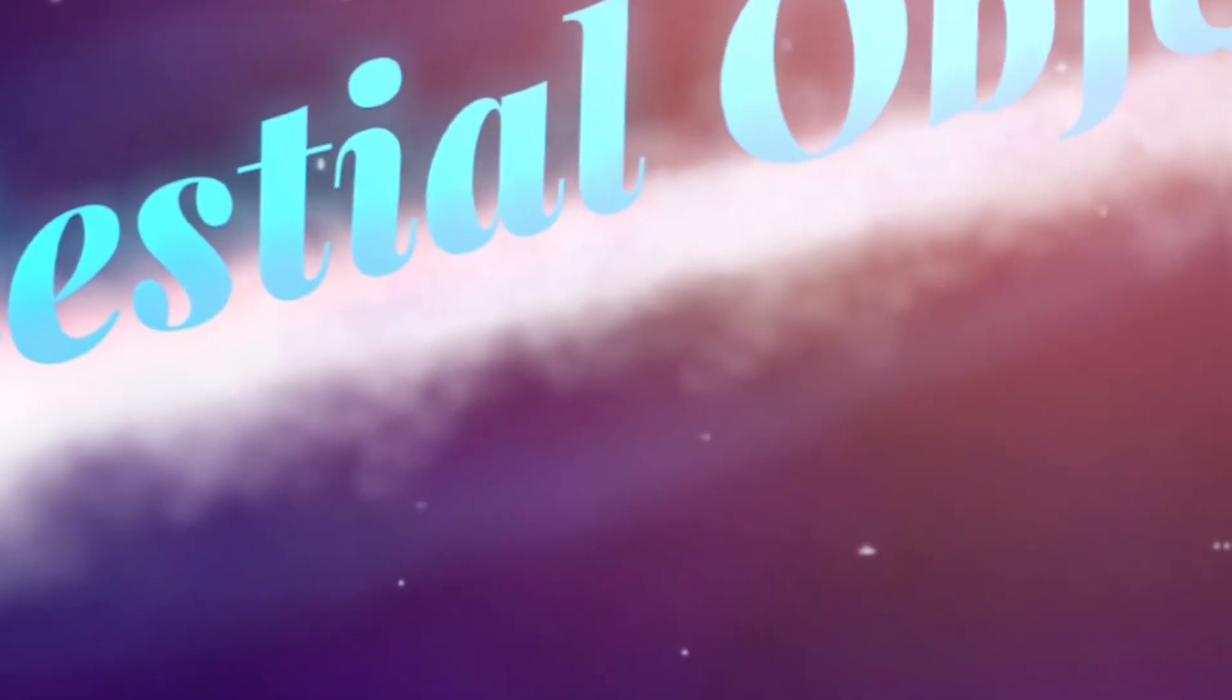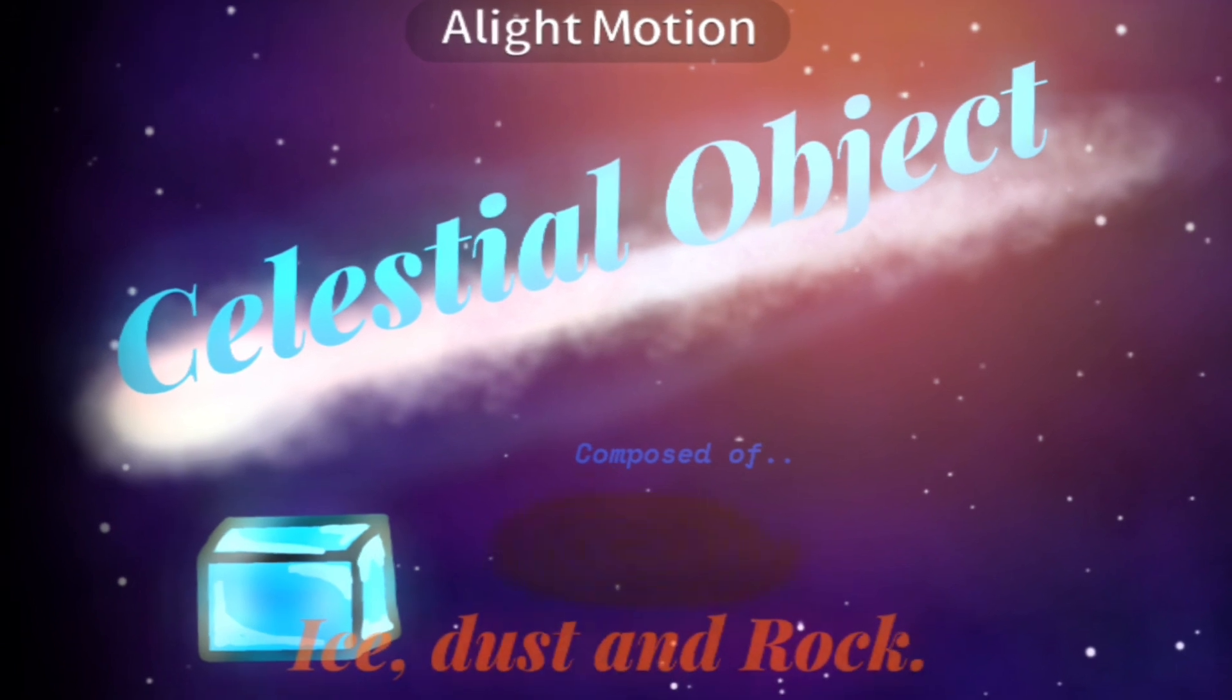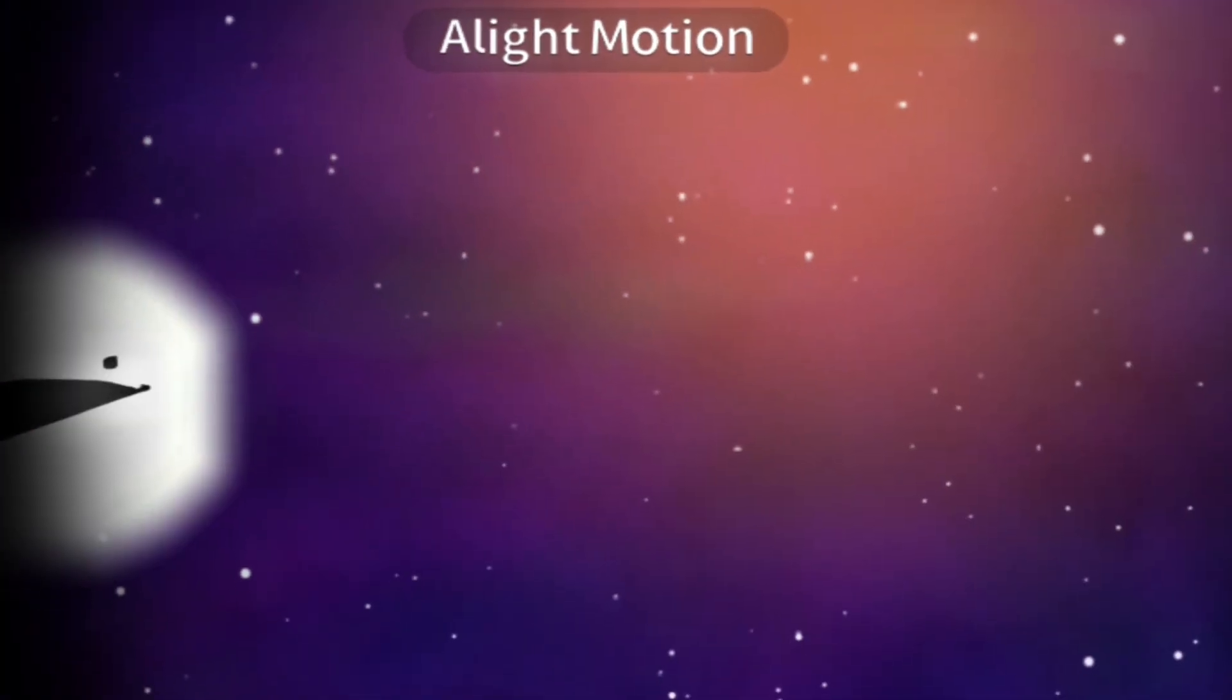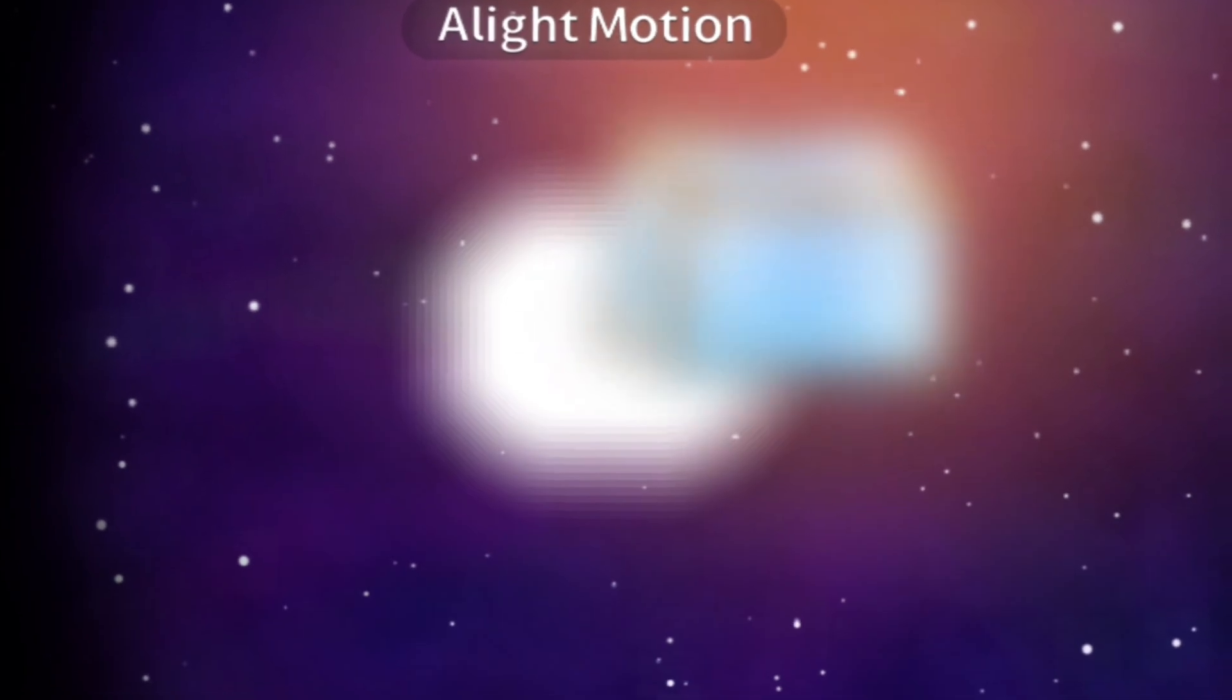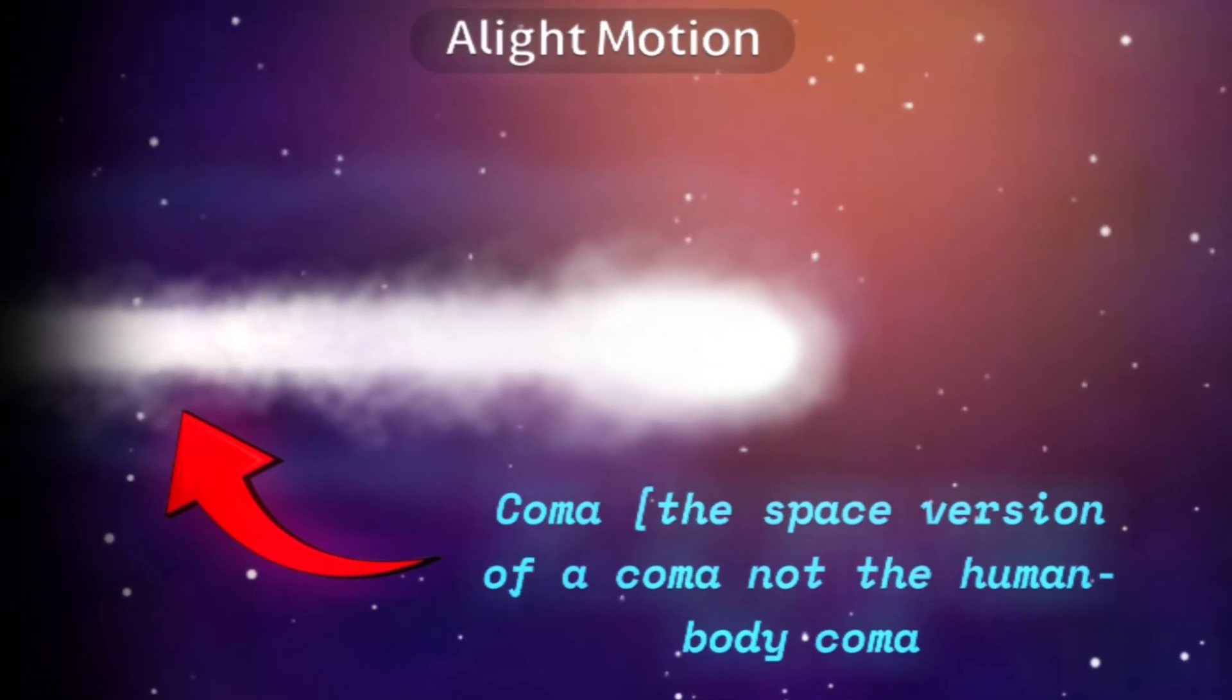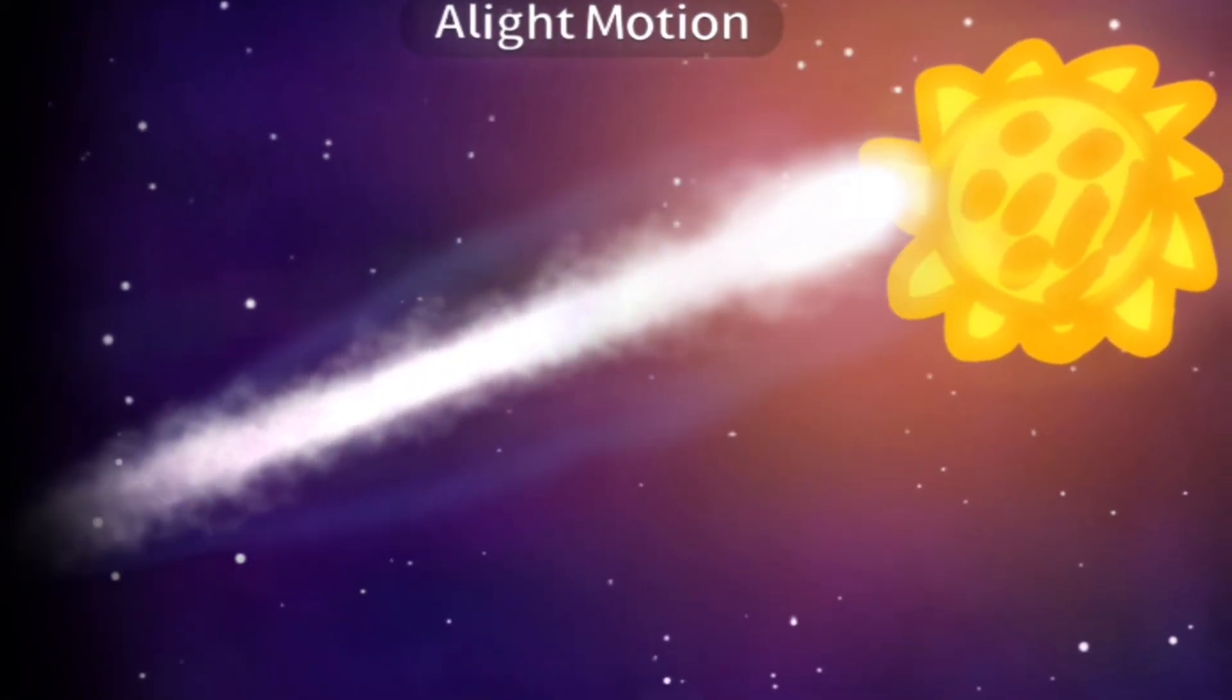A comet is a celestial object composed of ice, dust and rock. It orbits the sun. However, when a comet gets too close to the sun, the ice melts and sublimes. Creating a glowing head called a coma and sometimes a long visible tail of gas and dust. These tails always point away from the sun.